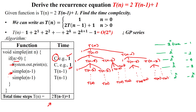The recursive call will run for n minus one time, and this recursive call also runs for n minus one time. When you add these values, you get some constant amount of time. So this is going to be written as: T(n) = 1 when n = 0, and T(n) = 2T(n-1) + 1 whenever n > 0.